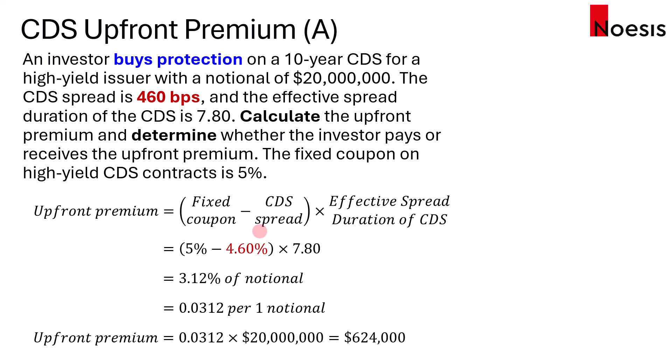In this case, the investor is the party that's buying the protection. You would have to look at the transaction from a fairness perspective. In this example, the investor would have to pay a coupon or premium of 5% throughout the life of the CDS contract to the protection seller, while the CDS spread is only 4.6%. Think of it as paying an insurance premium of 5% but the risk you're exposed to is only 4.6%. The investor would be overpaying the premium — paying more than the risk being hedged.